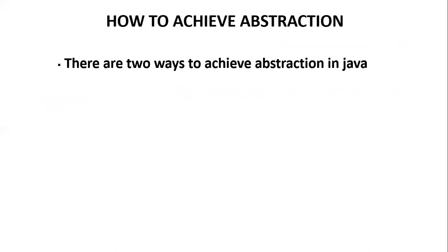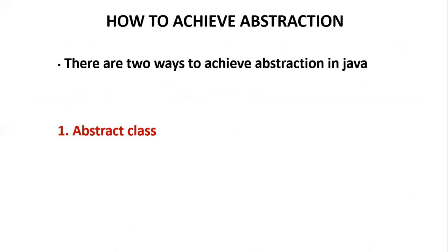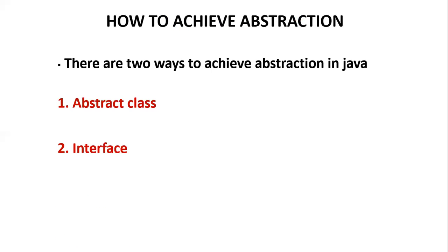In Java, abstraction can be achieved in two ways. First is using abstract class, and second is using interface. Using interface we can achieve 100% abstraction, whereas using abstract class we may or may not achieve 100% abstraction. Today we are going to discuss abstract class in detail.